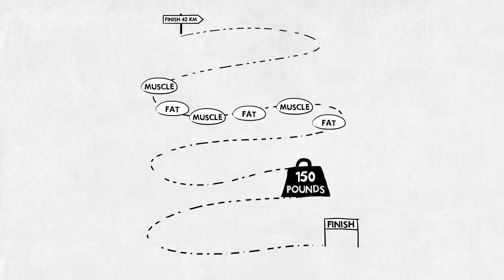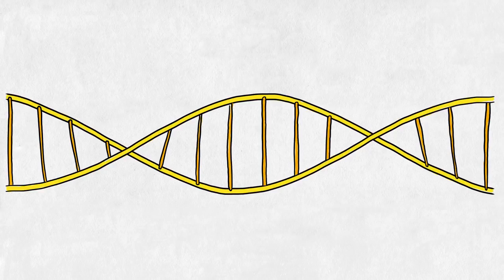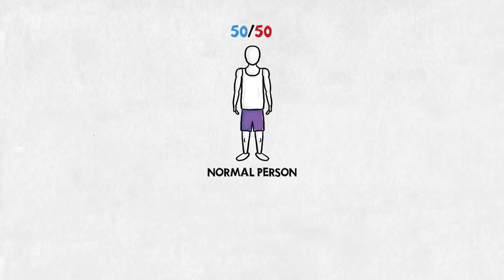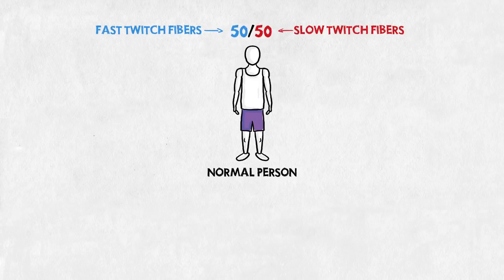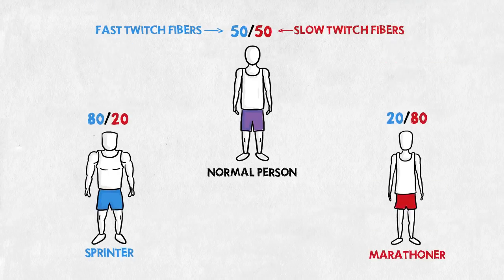On top of the difference in training, genetics also play a part. A normal person has about an even amount of fast and slow twitch fibers. But the persons that make it to the top tend to have more of one kind. So even untrained, they wouldn't have the same physical appearance.